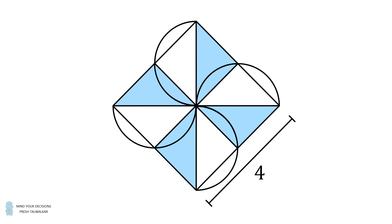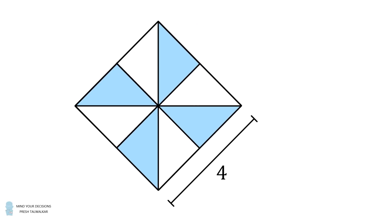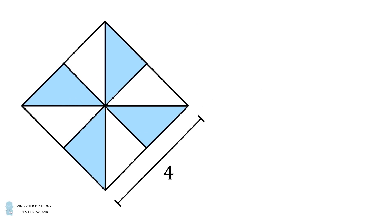From here, we've just shifted the blue area. So if we solve for the blue area that remains, we'll get the original answer. We have now created four isosceles right triangles, so we just need to figure out the sum of the areas of these four triangles. This is a straightforward task. Notice that we have divided the square into eight congruent right triangles and four of them are shaded in blue.